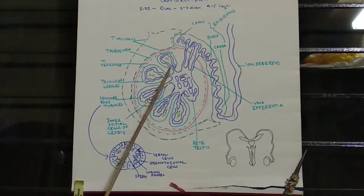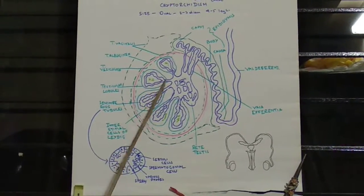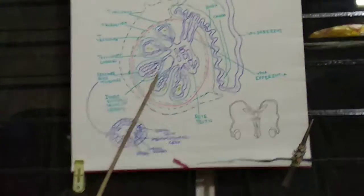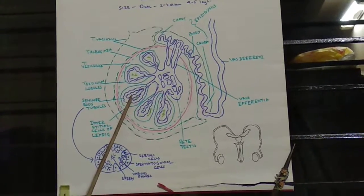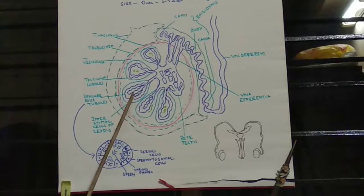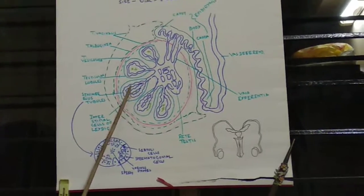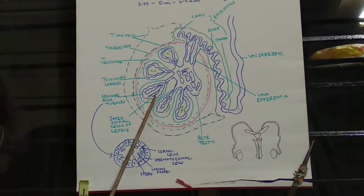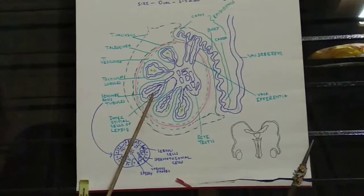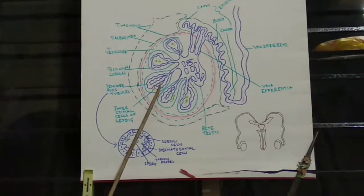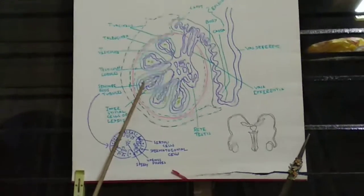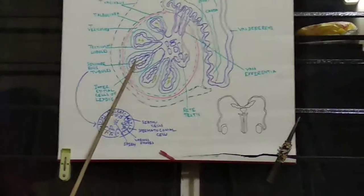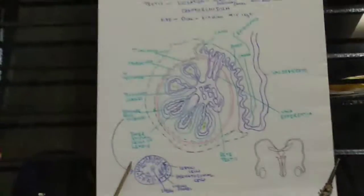Within the testicular lobules you can see coiled tubules called seminiferous tubules. Each testicular lobule contains two to three coiled seminiferous tubules. These seminiferous tubules are the region where sperms are produced.